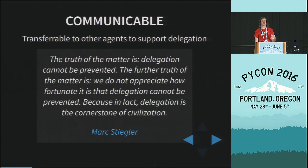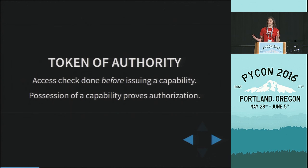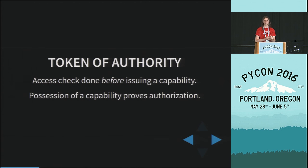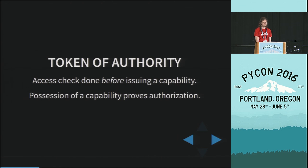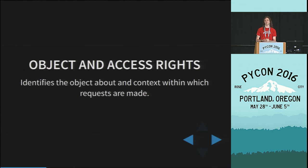Communicability is something that we'll come back to, but it's a very important property. A capability is a token of authority, so that means that we do an access check before we issue a capability. The capability represents that you already have authorization to use this resource. And the capability refers to some object, some resource, and the access rights to it within which your requests to that resource may be made.